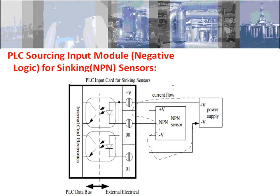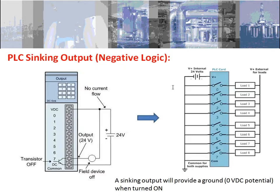PLC sourcing input module is of negative logic. In this module, all the inputs have V plus as common to all inputs. When the sensor is activated, if you measure the voltage at the input terminal it is logic low. When the sensor is not activated, if you measure the voltage at the input terminal it is logic high. So it is of negative logic.